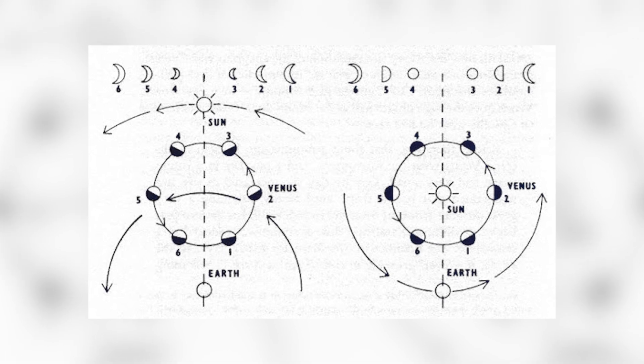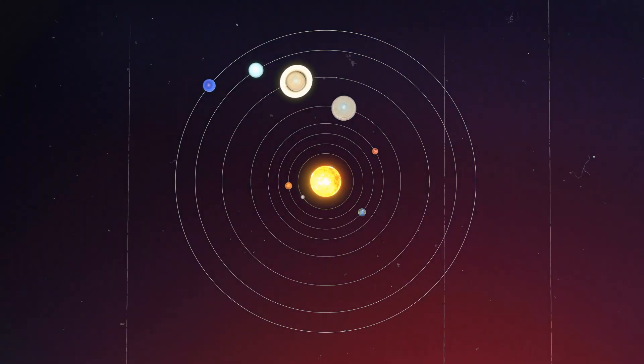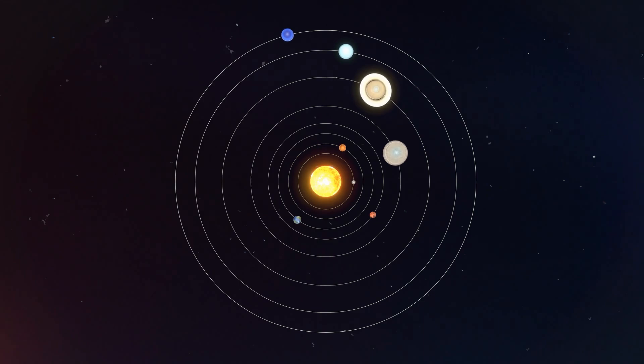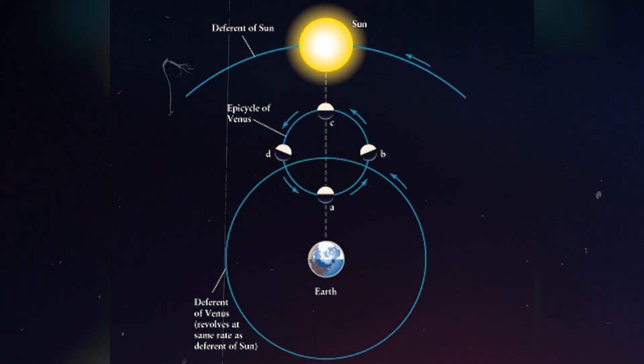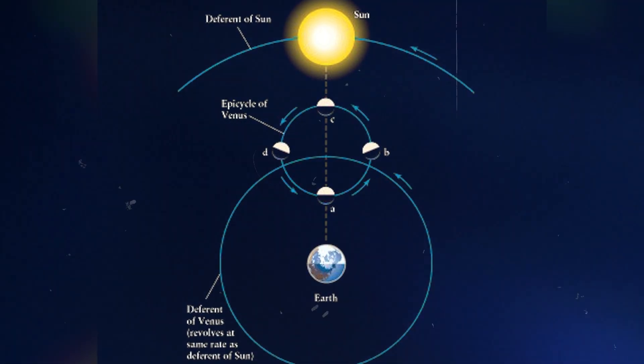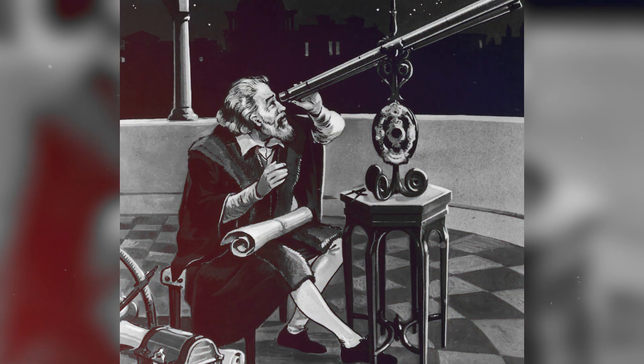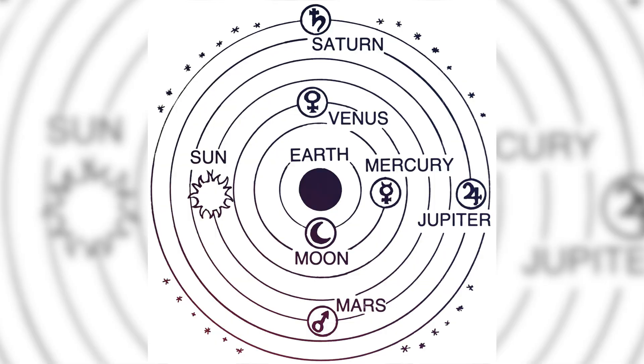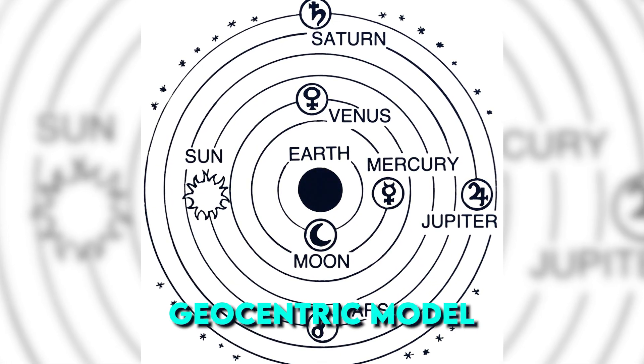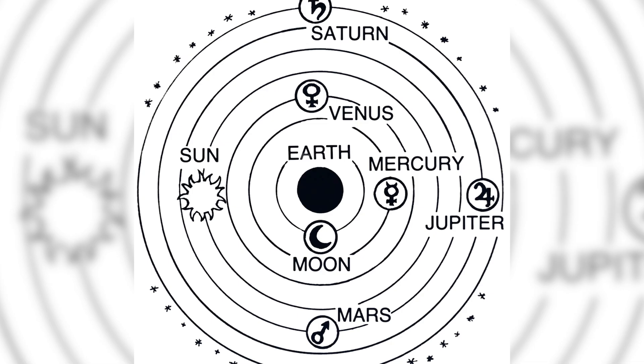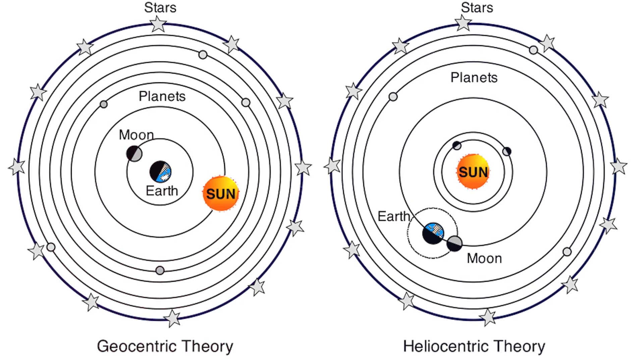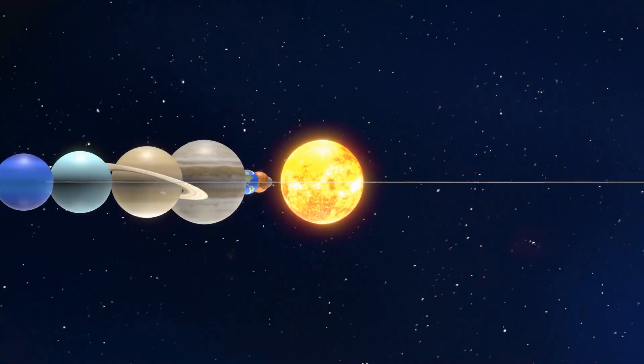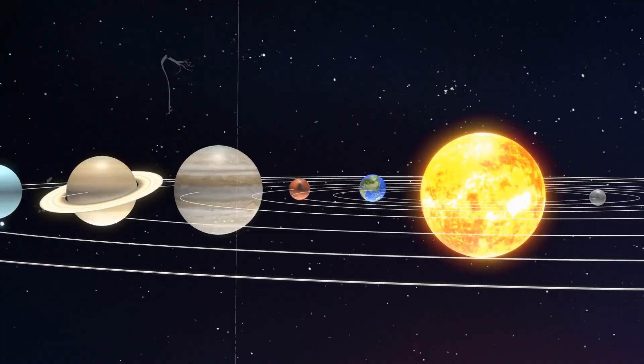Galileo's observations through his telescope revealed startling truths about the heavens. He observed the phases of Venus, which could only be explained by Venus orbiting the sun, not Earth. Galileo also discovered the moons of Jupiter, further challenging the geocentric model. His insights, combined with mathematical proofs and observations of planetary motions, led to the acceptance of the heliocentric model—the idea that Earth and planets orbit the sun.